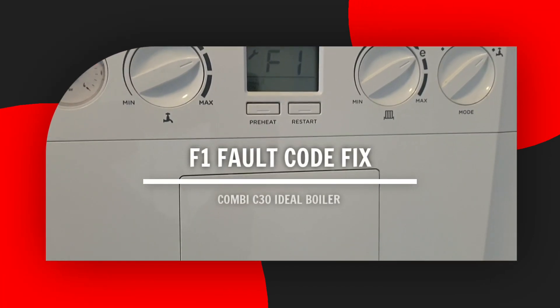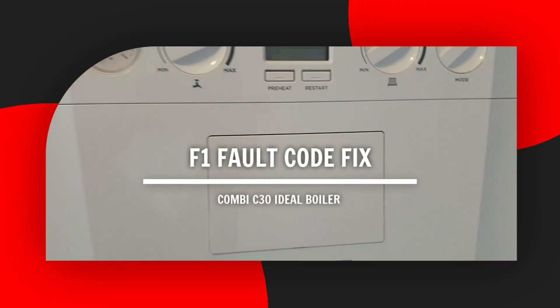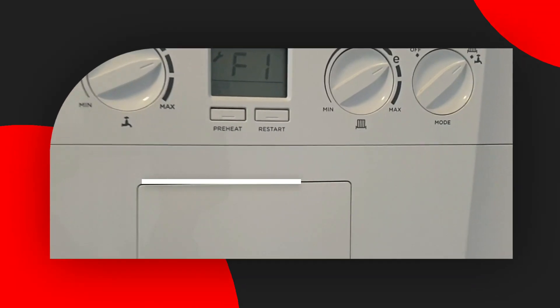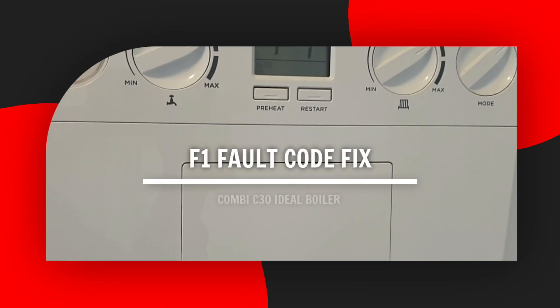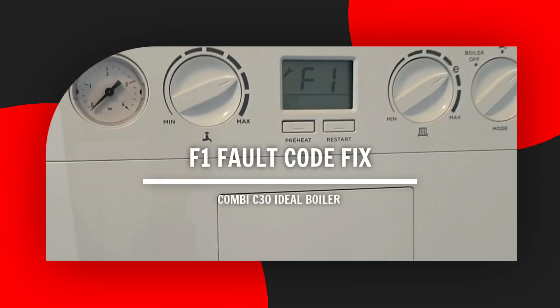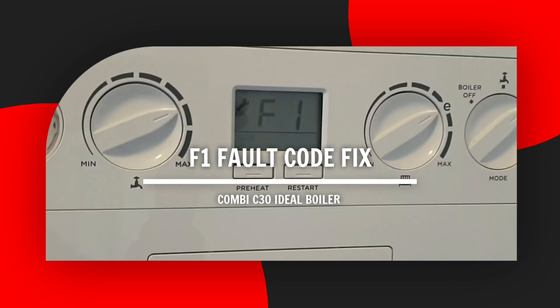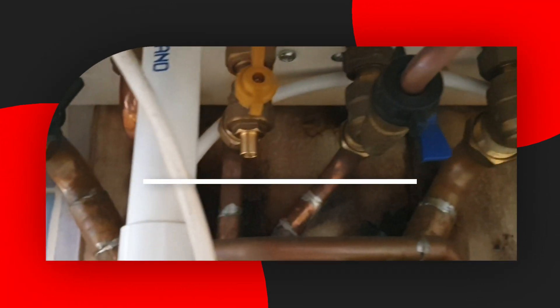Today we'll be looking at the F1 fault code on the C30 Ideal boiler. The F1 fault code is mainly a result of low boiler water pressure in the boiler.